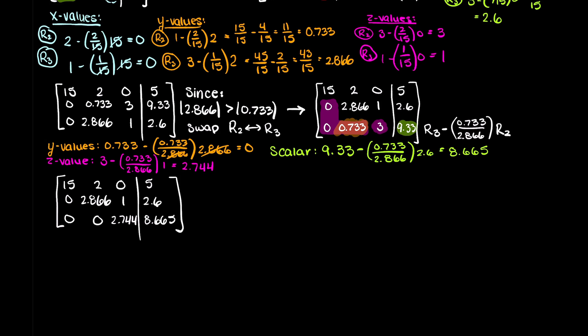Additionally, you will notice that we have all our pink elements to 0, as we said we wanted earlier. Therefore, we are now ready to begin backward substitution and solve these three equations. We begin with our last row, and we can solve for z, which is 3.157.